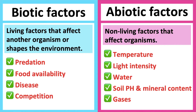A reduction in light intensity can affect the rate of photosynthesis, which will ultimately affect food availability. Both plants and animals also need water for survival. Therefore, a change in the water level can also affect organisms.